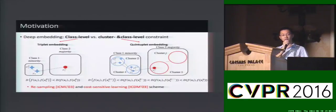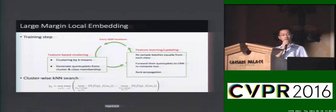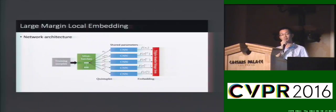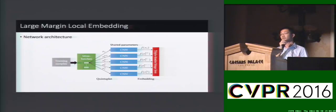We also study the resampling and cost-sensitive learning schemes in our approach. This is our network architecture. We perform equal class resampling in the mini-batch and assign class costs when the sampling is not strictly equal. For every single sample in the mini-batch, we retrieve the quintuplets and calculate their feature vectors, which are subject to a new triple-header hinge loss to ensure the aforementioned distance relationship.